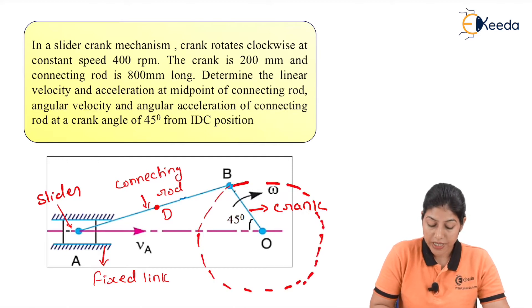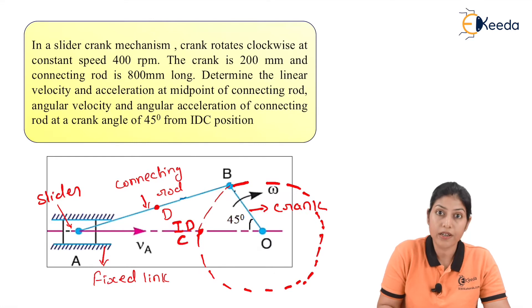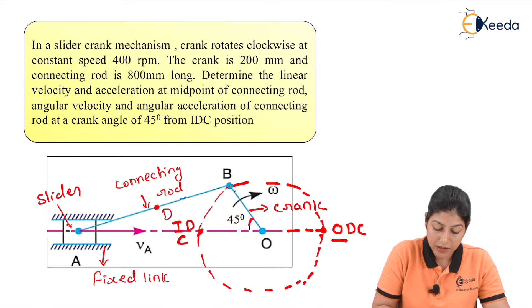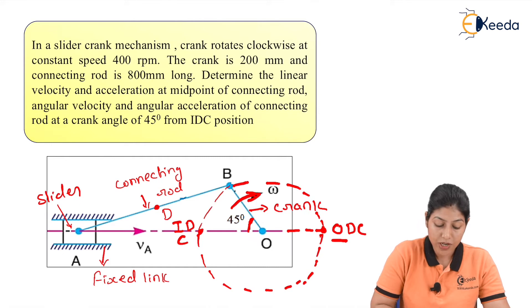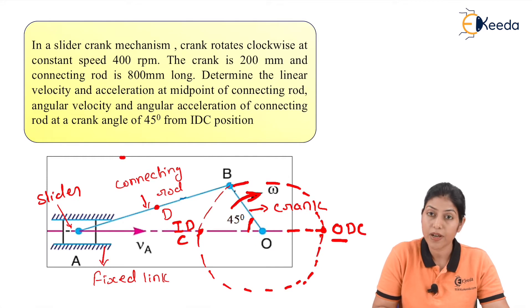If this crank is completing one revolution in terms of a circle, this particular point is called IDC or inner dead center, and this particular point is called outer dead center. From inner dead center, this crank is making angle theta that is 45 degrees. For this particular condition when the crank is rotating with angular velocity omega, we have to determine the angular velocity and angular acceleration of the connecting rod at this particular angle of 45 degrees from the IDC position.